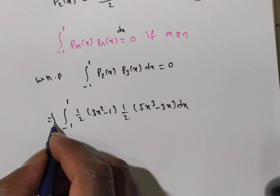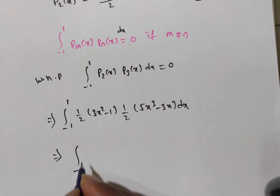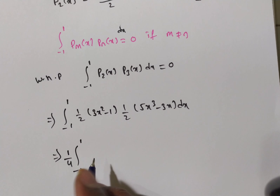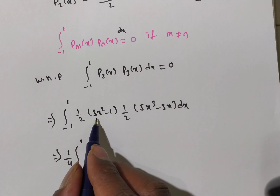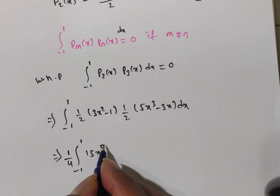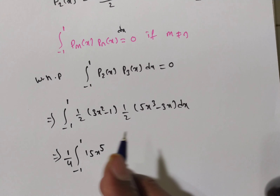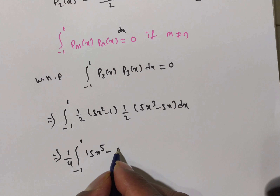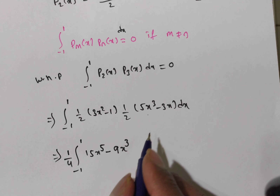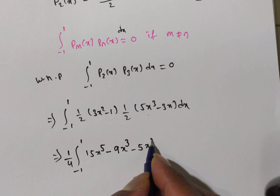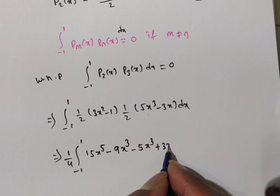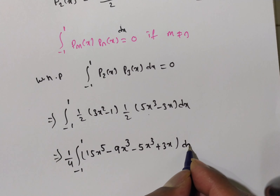This is equivalent to the integral from minus 1 to 1. Since 1/2 is a constant and there is another 1/2, we take (1/4) outside. Now multiplying inside: 3X squared times 5X cubed gives 15X to the power 5. Then 3X squared times minus 3X gives minus 9X cubed. Next, minus 1 times 5X cubed gives minus 5X cubed, and minus 1 times minus 3X gives plus 3X, all times dx.